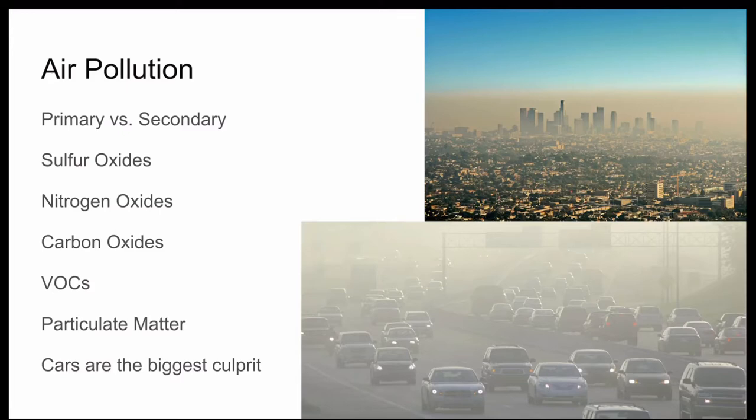First are sulfur oxides, like sulfur dioxide or sulfur trioxide. These are created by burning fossil fuels, because fossil fuels have sulfur in them, which combines with oxygen in the air during combustion reactions. Sulfur oxides also make their way into the air during volcanic eruptions. These sulfur oxides can bond with water and air, which creates sulfuric acid, which can fall down as acid rain, acid snow, or any other kind of acid precipitation.